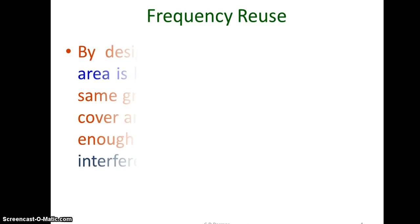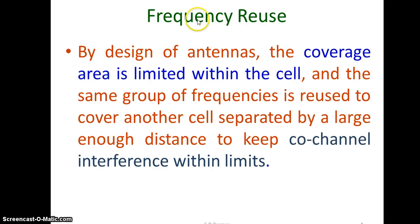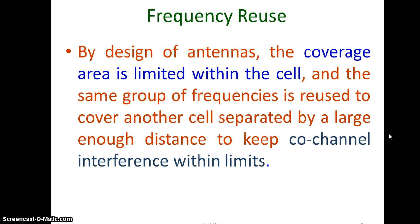The idea here is frequency reuse. By the design of antennas, the coverage area is limited within the cell, and the same group of frequencies is reused to cover another cell separated by a large enough distance to keep co-channel interference within limits. This means we divide our area — Gujarat — into smaller areas, provide different frequencies to different areas, and reuse the same frequency in areas that are spatially separated enough so two cells using the same frequency do not interfere with each other.